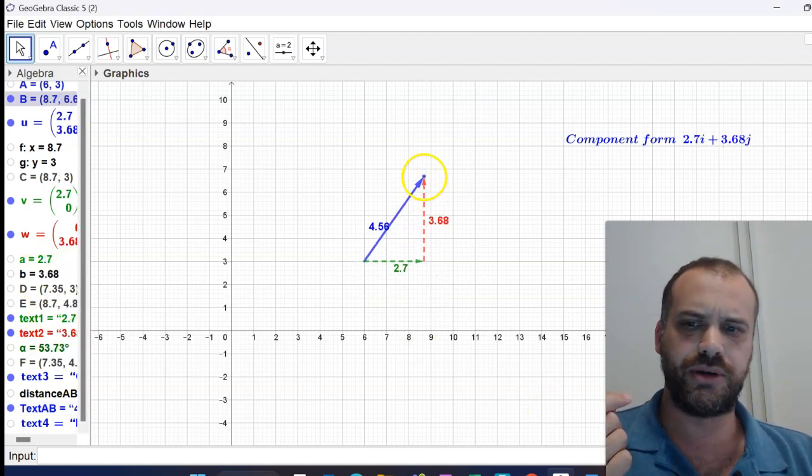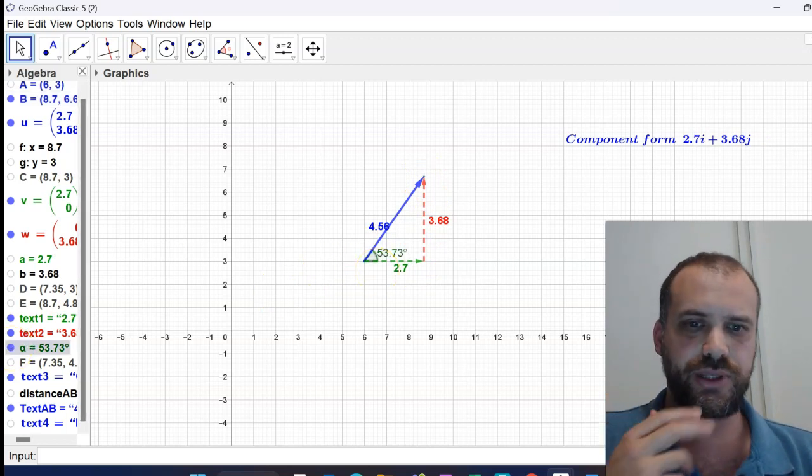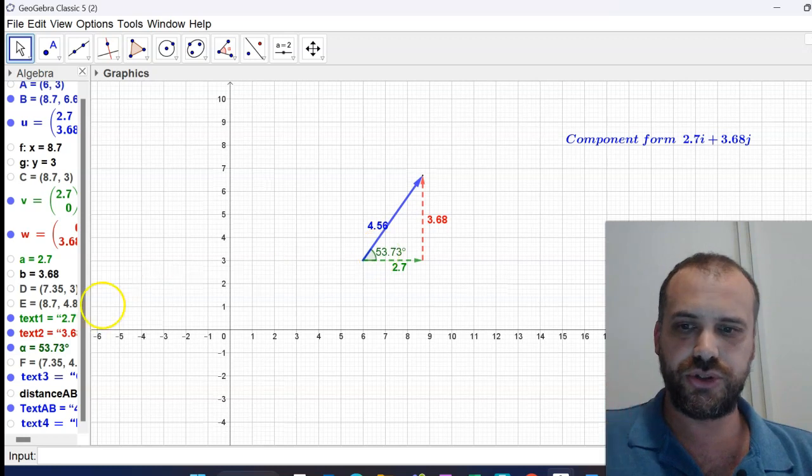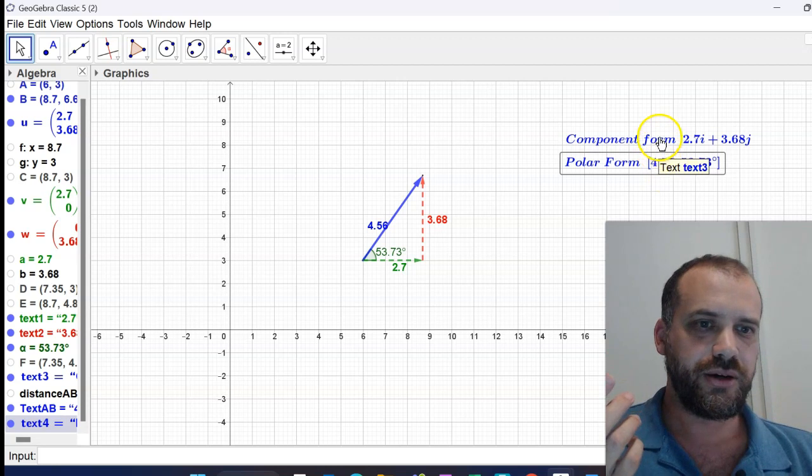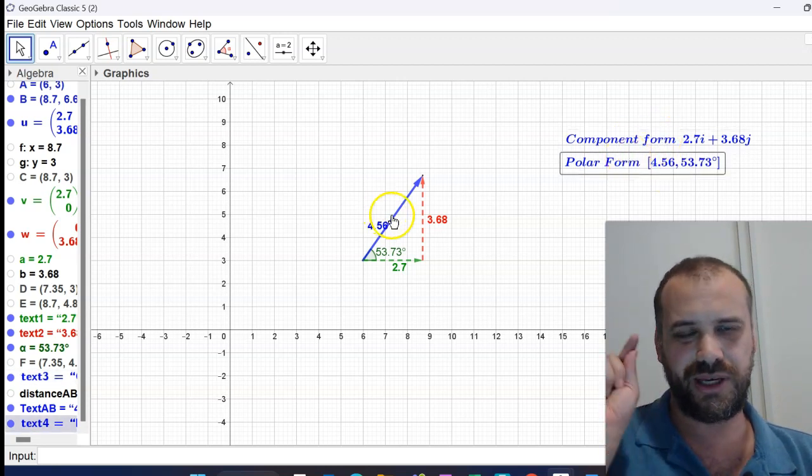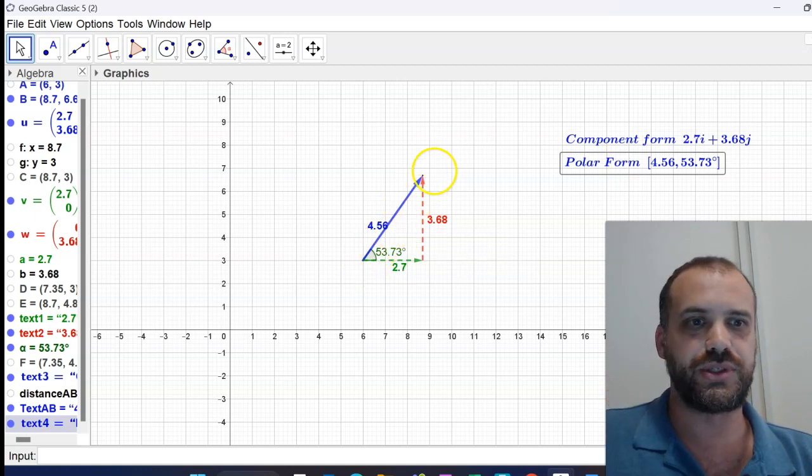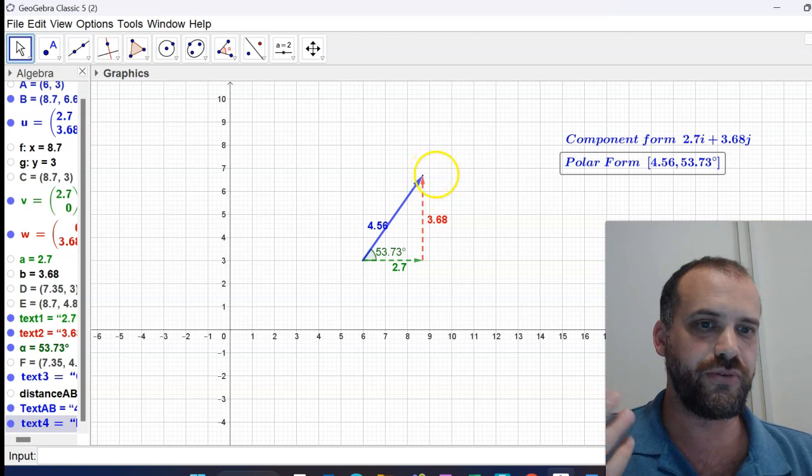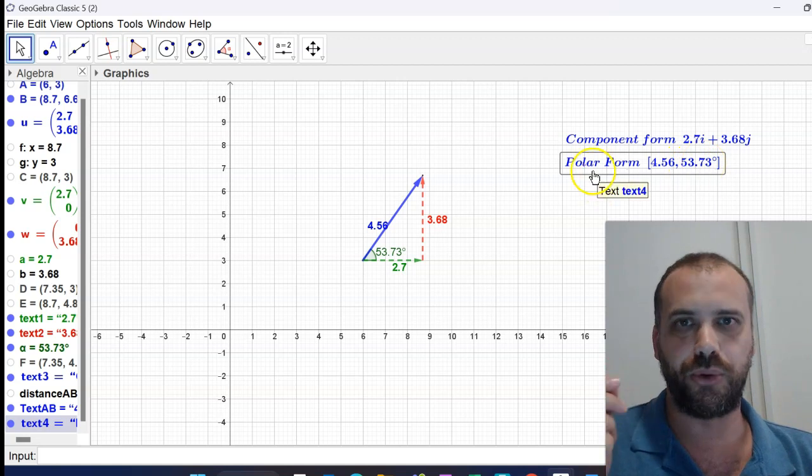Let's move to a slightly easier one at the moment, this one right here, 53.73. So you put those two pieces of information together and you have this polar form. Now these are two equivalent ways of talking about the same vector. This vector is 2.7i plus 3.68j in component form but it is also 4.56, 53.73 degrees in polar form.